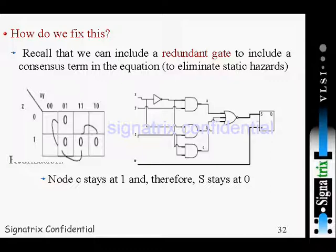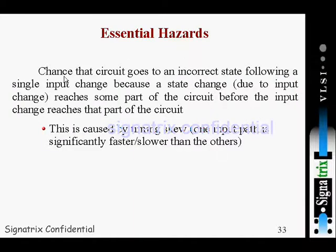Essential hazards: the chance that a circuit goes to an incorrect state following a single input change because the state change, due to input change, reaches some part of the circuit before the input change reaches that part of the circuit.